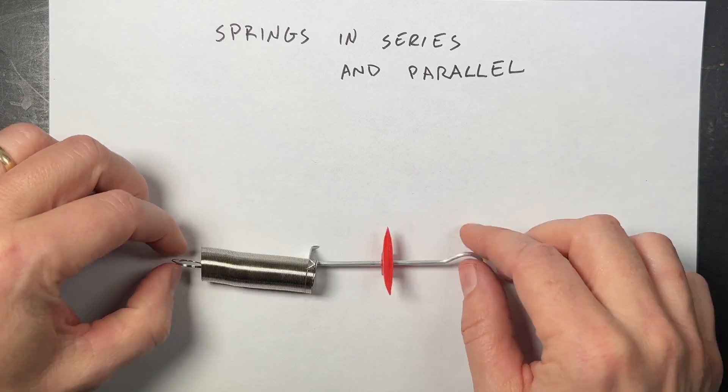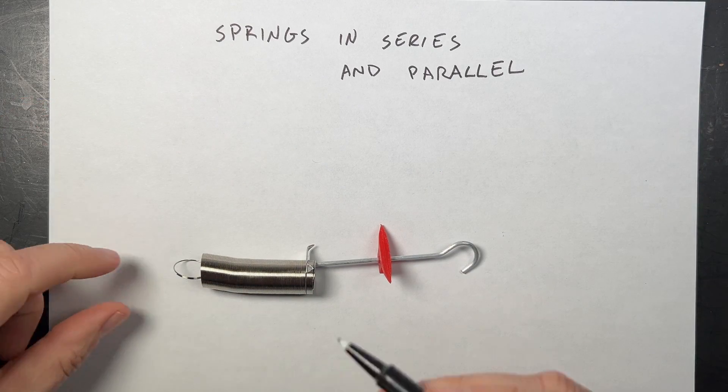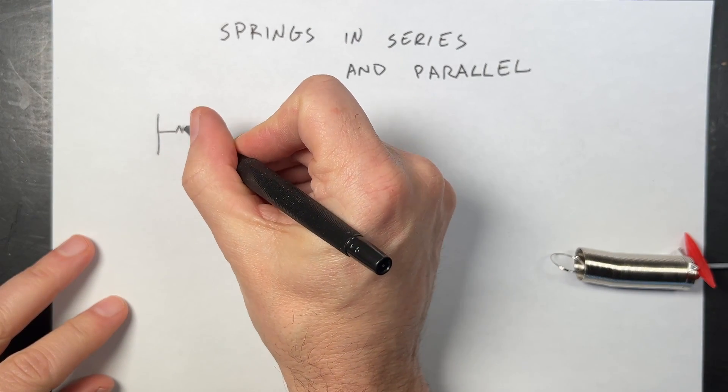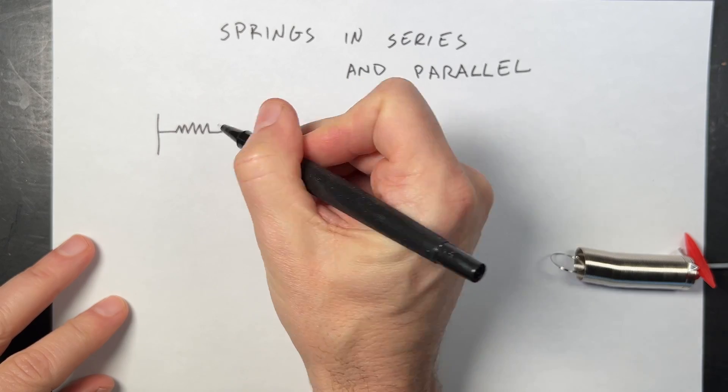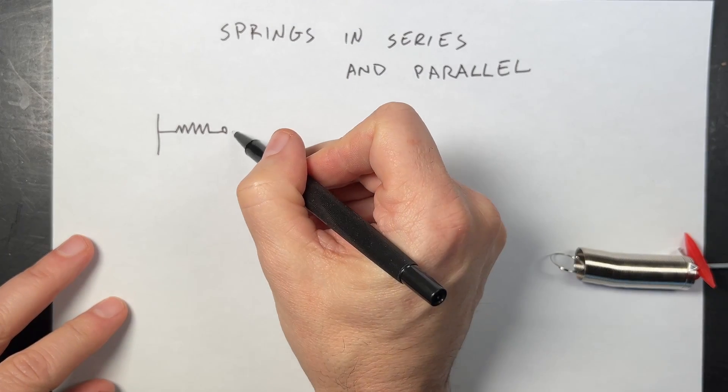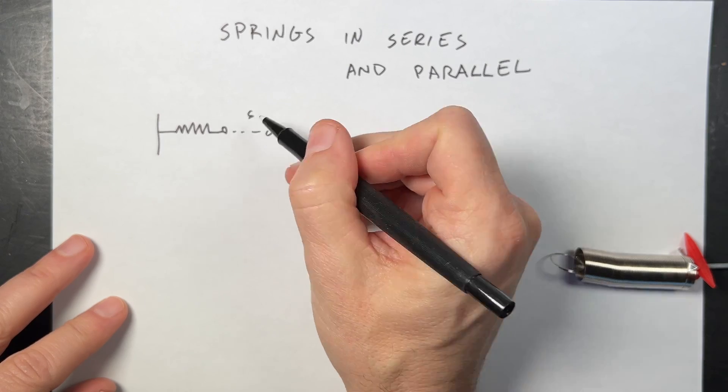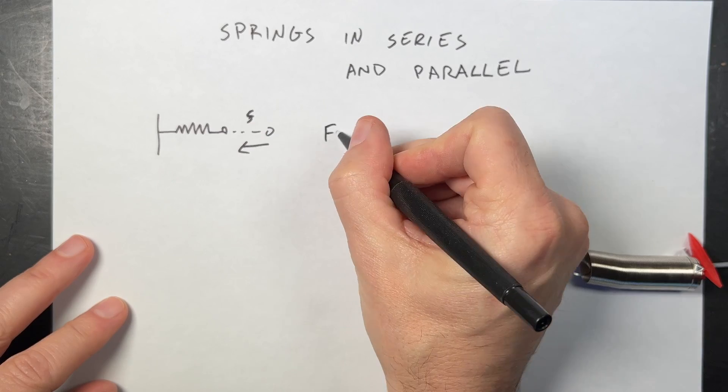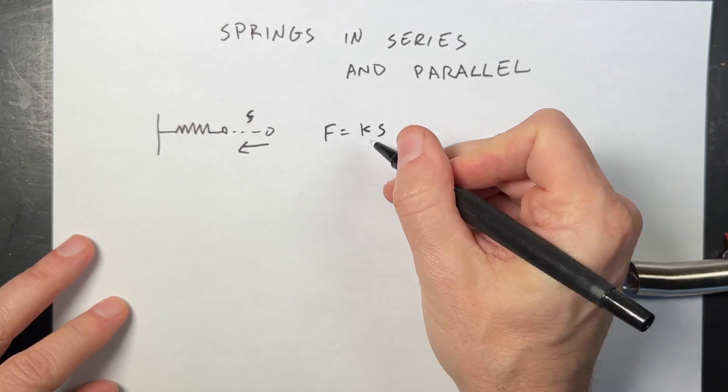And one of the things about springs, the way we model springs, is that if I have a single spring like this and I stretch it a distance s, then there will be a force pulling back and the magnitude of that force is k times s.